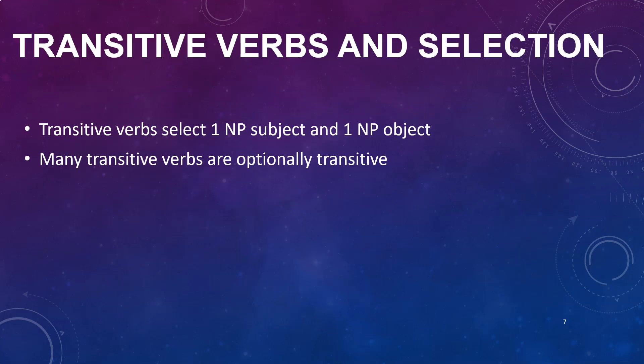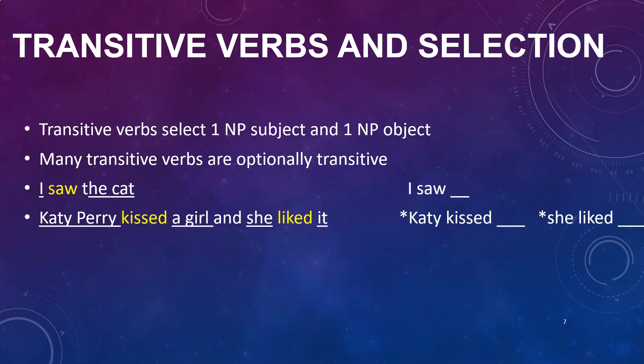Transitive verbs select one noun phrase subject and an object, and many of them are quite optionally transitive. For instance, you can say 'I saw the cat' — 'saw' selects the subject 'I' and 'the cat' as an object — and you can also delete the object: 'I saw' is quite grammatical. Other verbs are not as forgiving; if you remove the object from 'Katy Perry kissed a girl and she liked it,' removing 'a girl' leaves something missing.